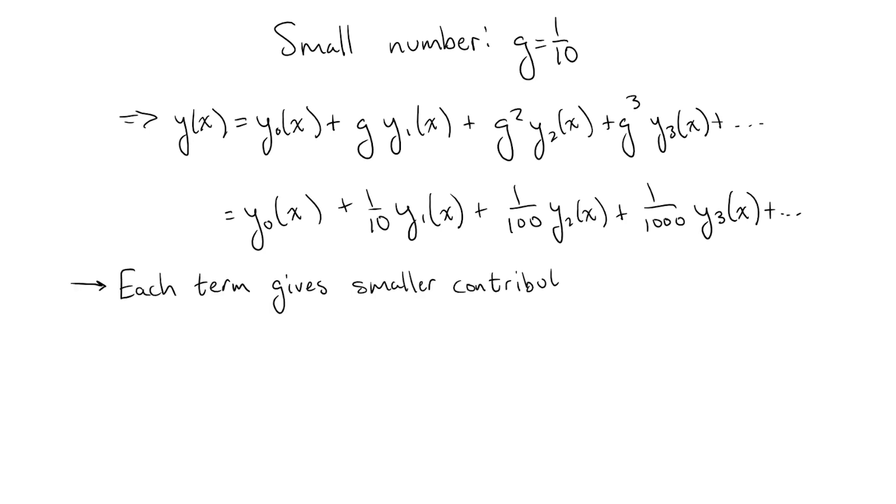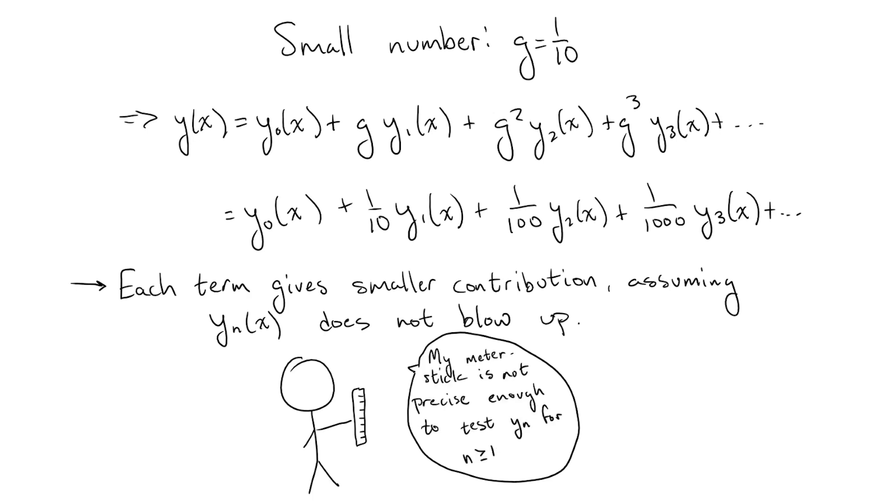Now, remember that the whole point of this is to get a prediction that we can compare with experiments. Since experiments will never have infinite precision, at some point we can just truncate the series since any extra terms we calculate will be smaller than the experimental error, and so the experiments will not be able to actually test these terms.